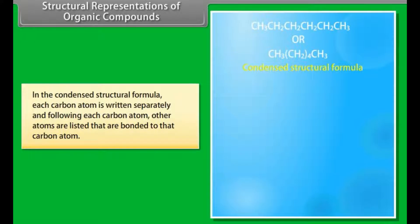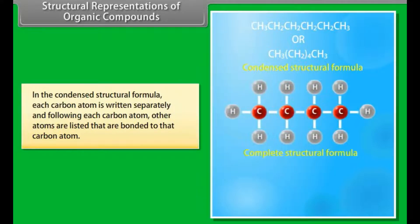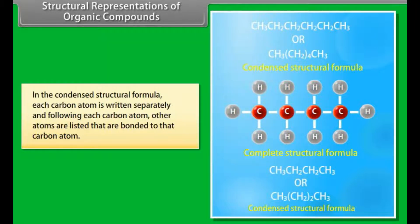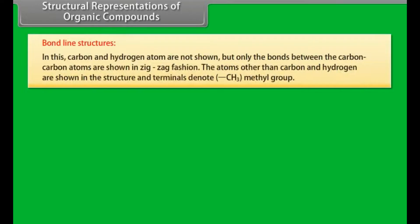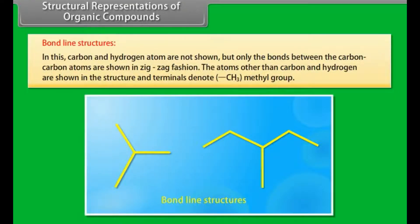In the condensed structural formula, each carbon atom is written separately and following each carbon atom, other atoms are listed that are bonded to that carbon atom. In bond line structures, carbon and hydrogen atoms are not shown but only the bonds between the carbon-carbon atoms are shown in zigzag fashion. The atoms other than carbon and hydrogen are shown in the structure and the terminals denote methyl group.